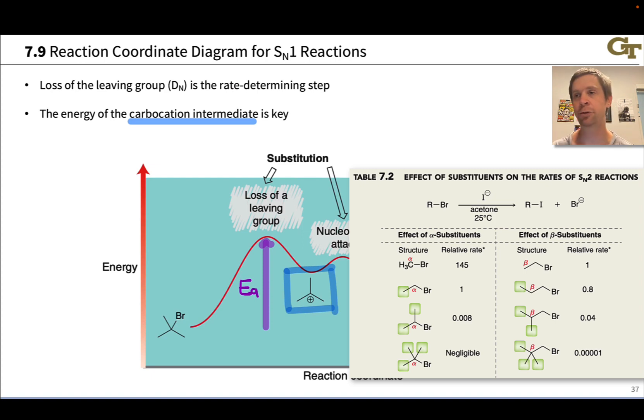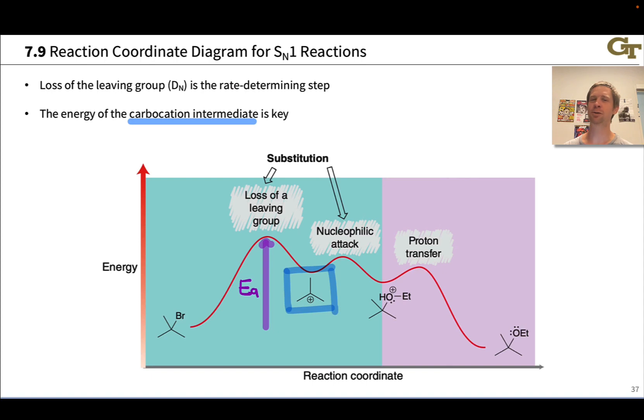So, for methyl and primary substrates, SN2 occurs exclusively. For tertiary substrates, SN1 occurs exclusively. And there can be some ambiguity when we get to secondary substrates. We sometimes see, for instance, a mixture of SN2 and SN1 occurring, and the mechanism that takes place can depend on the structure and strength of the nucleophile, as well as the solvent used.